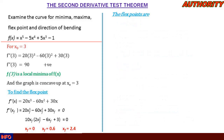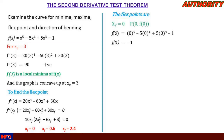To find the flex points, we substitute each xf value into the original function f(x) = x⁵ − 5x⁴ + 5x³ − 1. For xf = 0: f(0) = 0 − 0 + 0 − 1 = −1. So the first flex point is P(0, −1).